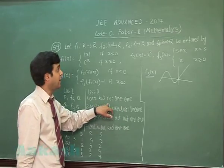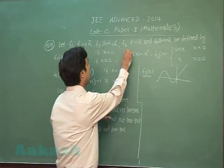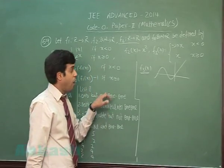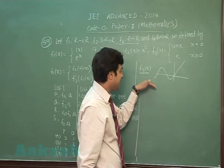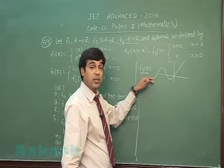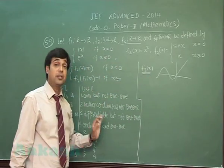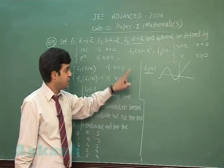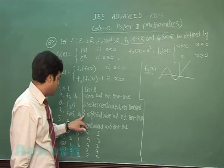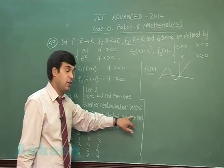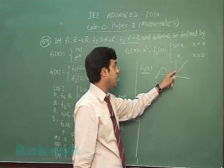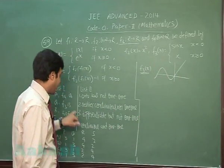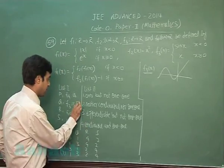So the function f3 is continuous as well as differentiable. Option one says onto but not one-one. This function is not one-one. Whether onto or not, we need to go for R to R. It is taking values up to positive infinity but starting from minus 1 only, so it is not onto. Neither continuous nor one-one: this function is differentiable as well, so it is not the one. Differentiable but not one-one: this is clear, it is differentiable but not one-one.